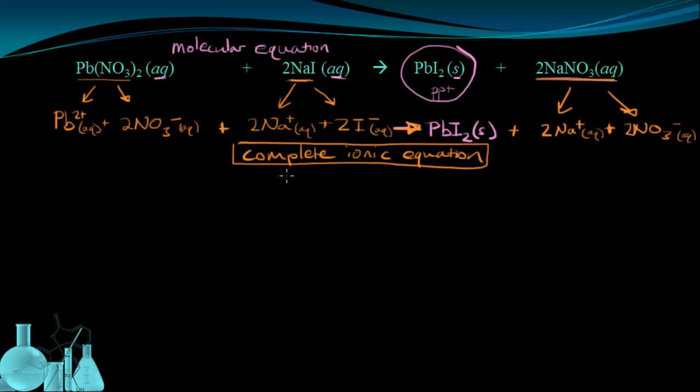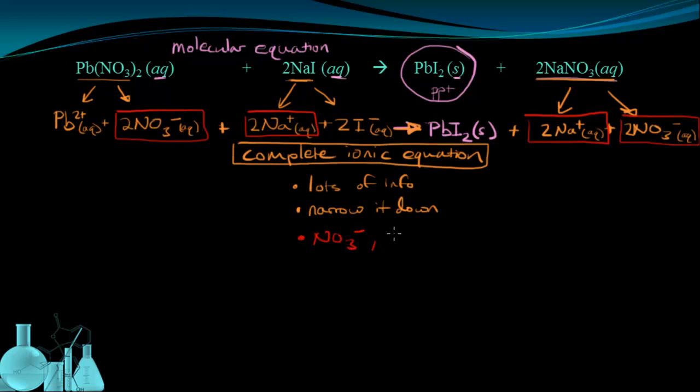One of the first things that may come to mind when looking over this complete ionic equation is that there's lots of information present, probably more than we need, so we can actually narrow this down. Specifically, we can see that a couple ions show up in the same state on both sides of the equation. We have two NO3- ions on this side, and we also have two NO3- ions on the product side. We also have two sodium ions on the reactant side that show up the same way on the product side. Notice how these pairs of ions are identical on both sides. We call these spectator ions.